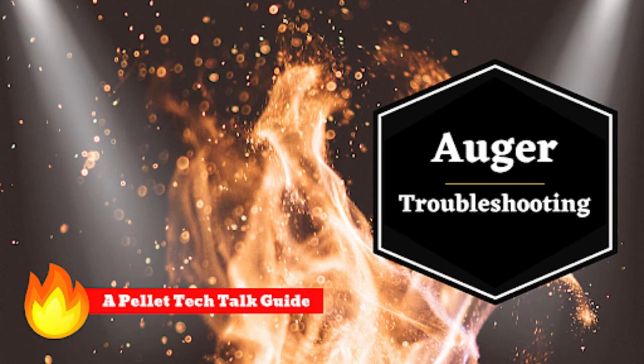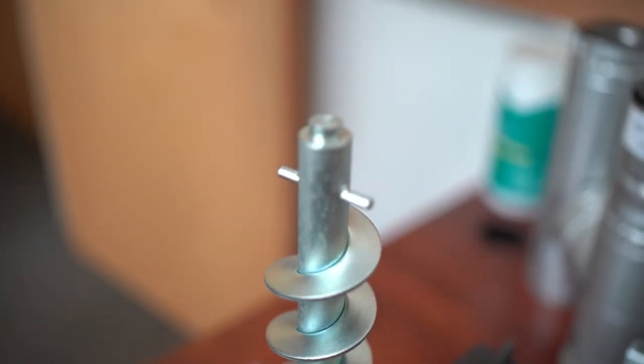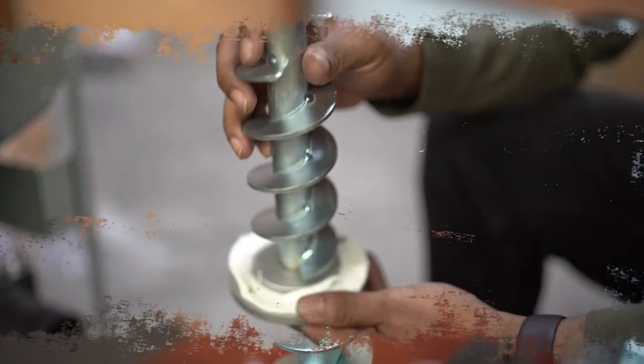To access the augur bearings, you need to remove both the augur motor assembly and the augur shaft. Refer to our augur troubleshooting video for removal instructions. Links will be in the description. Special note: Take consideration as you are removing the augur bit, as the top augur bearing may fall down during this step.